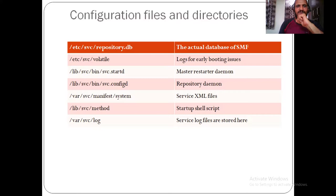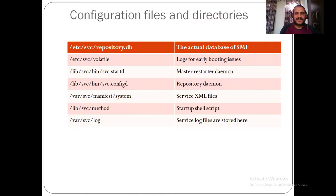To summarize the key locations: /etc/svc/repository.db holds the SMF database; /lib/svc/bin/svc.startd is the master starter daemon and svc.configd is the repository configuration daemon; all service manifests are under /var/svc/manifest/system; shell scripts are under /lib/svc/method; and logs are under /var/svc/log.